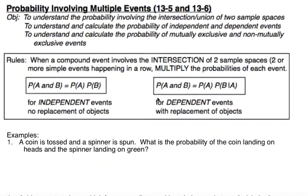The first big idea is that we need to understand that when we have multiple events happening, we are going to multiply the probability. So if we have two probabilities — probability of event A happening and event B happening — we're going to multiply them. So probability of A times the probability of B.